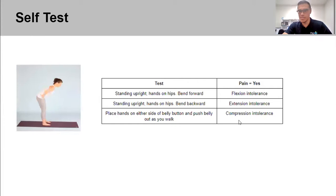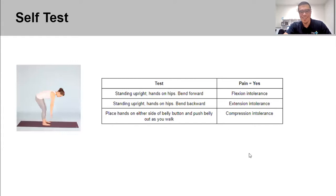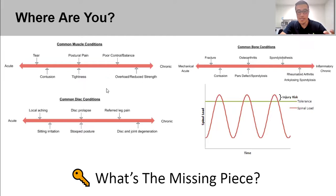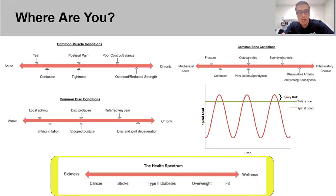This self-diagnostic test can help guide how to best graduate an exercise program for you. There are many structures — muscles, bones, discs, nerves — all of which can give pain signals. Identifying your specific intolerance helps us allocate our efforts appropriately. I'll provide tangible exercises you can start today towards the end of this presentation.